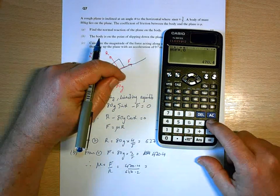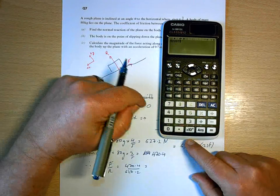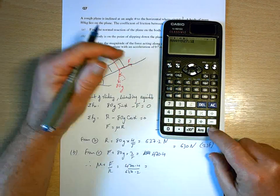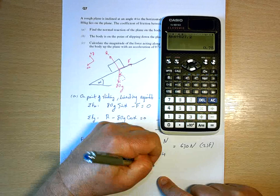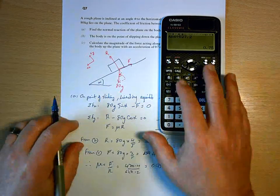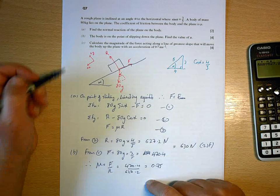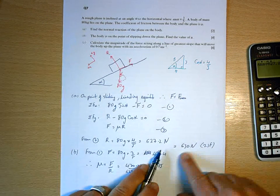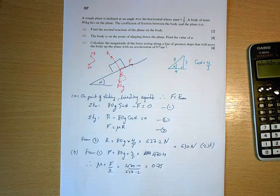Therefore, mu is going to be f over R, which will be 470.4 over 627.2, so divided by 627.2, or 0.75. So mu is 0.75. So I've done a, which is the reaction, and I've done b, which is mu.